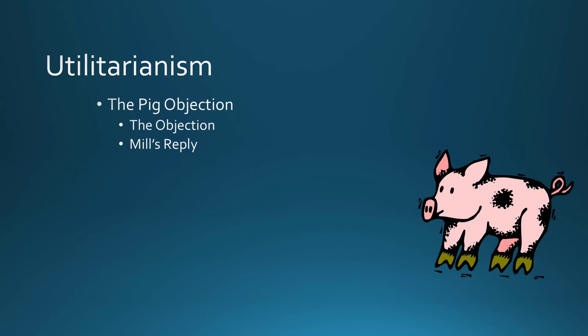This is not the first time the objection has been raised, so Mill can help himself to past objections. The Epicureans — Greek and Roman thinkers — took pleasure to be the highest good, and their reply was pretty clever: they turned the tables on the accuser, saying it is the accuser who is presenting humans in a degraded way, since they suppose the only pleasures humans can experience are pig pleasures.